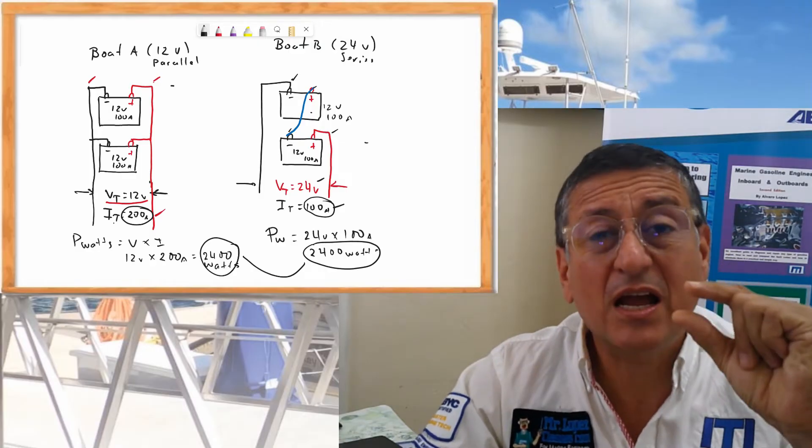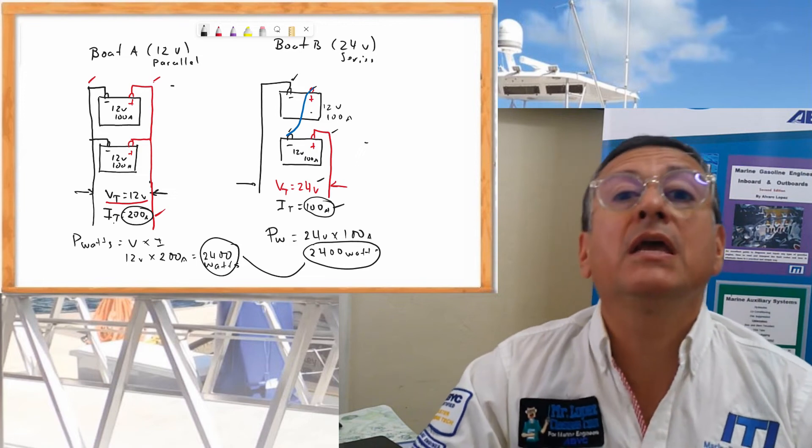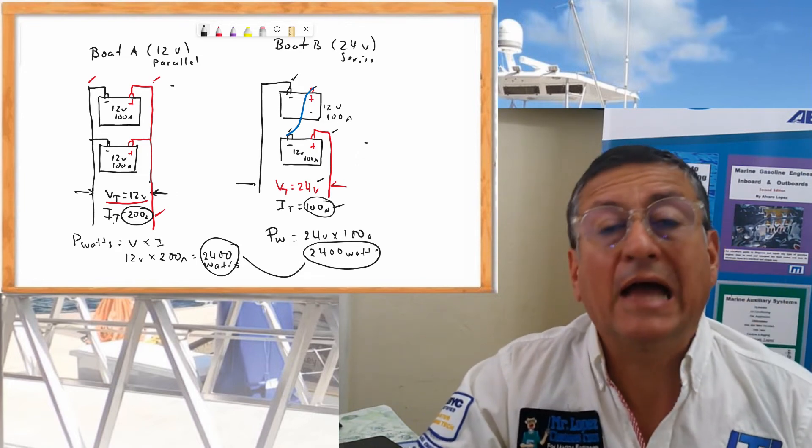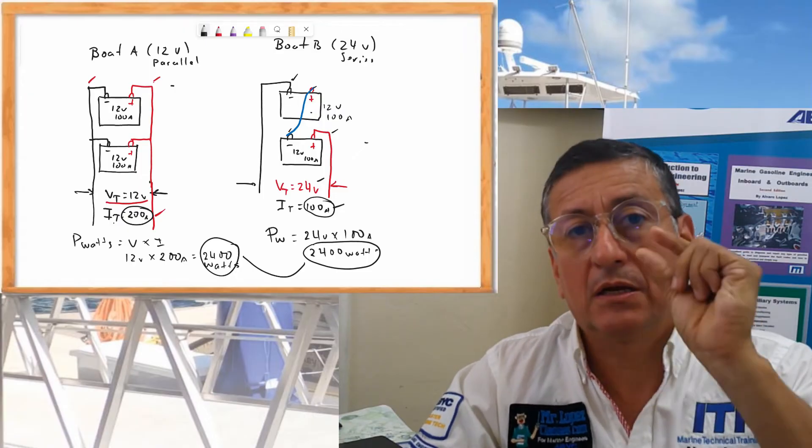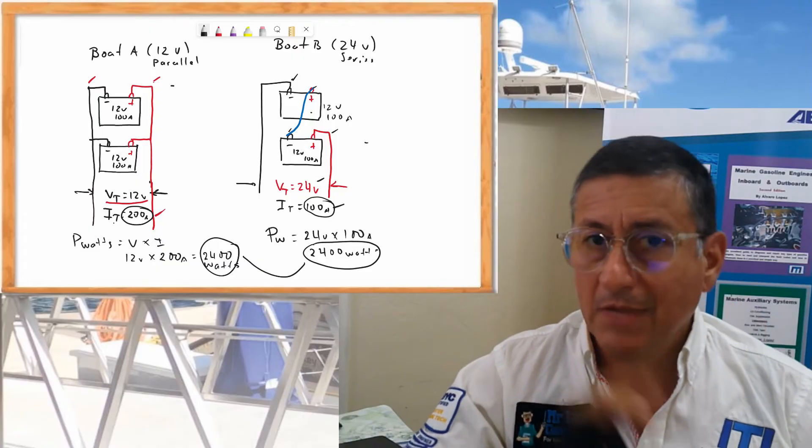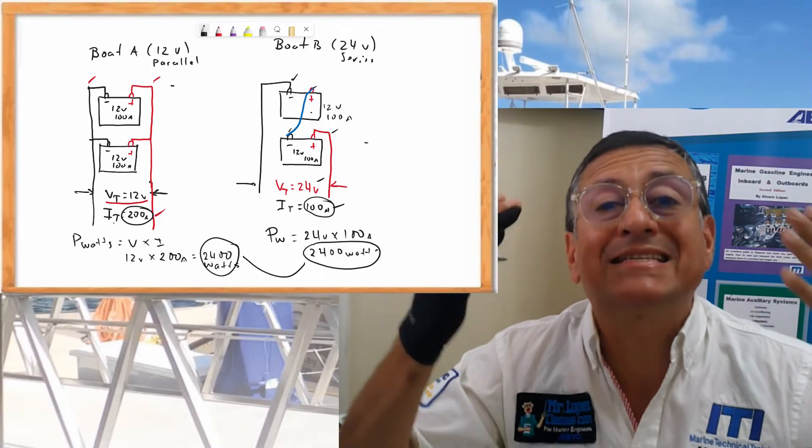I need thicker cables, bigger cables in parallel connection because I move more amps. I need less diameter, thinner cables in series because I move less amps. Important! But the power is the same.